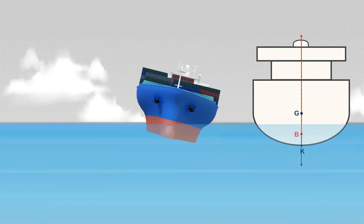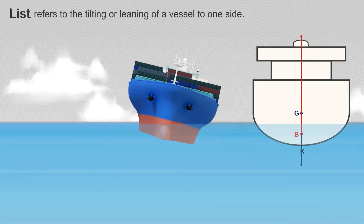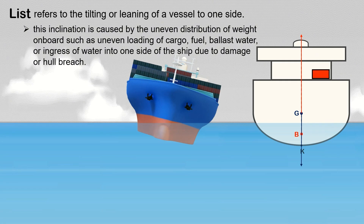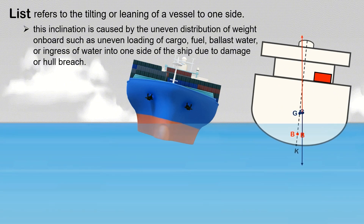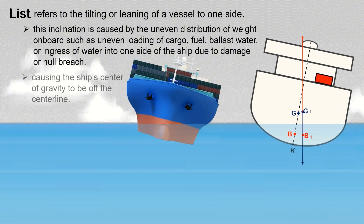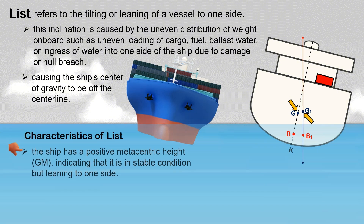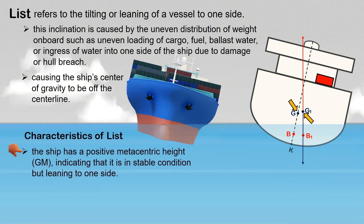List refers to the tilting or leaning of a vessel to one side. This inclination is caused by the uneven distribution of weight on board, such as uneven loading of cargo, fuel, ballast water, or ingress of water into one side of the ship due to damage or hull breach, causing the ship's center of gravity to be off the centerline. The characteristics of list are: the ship has a positive metacentric height GM, indicating that it is in a stable condition but leaning to one side.